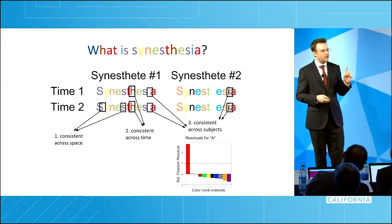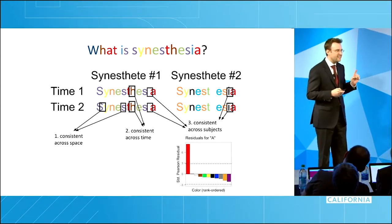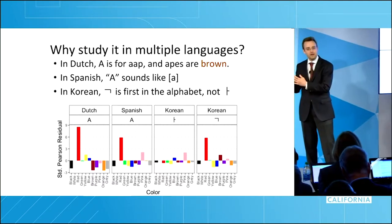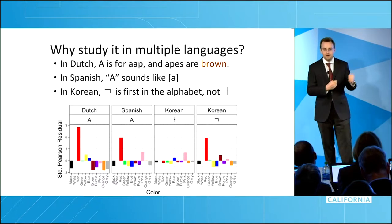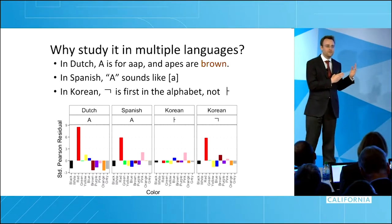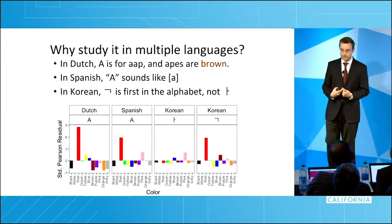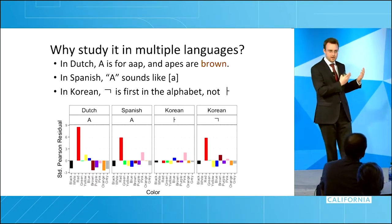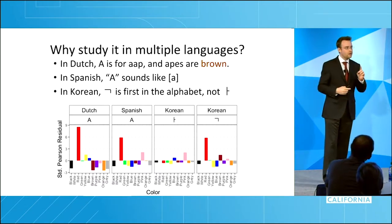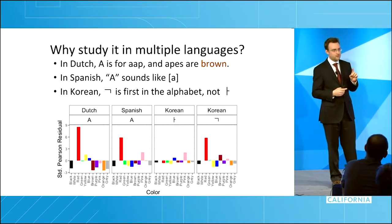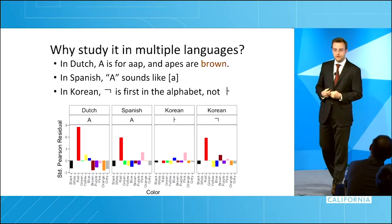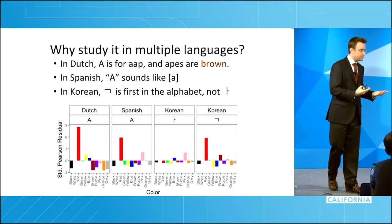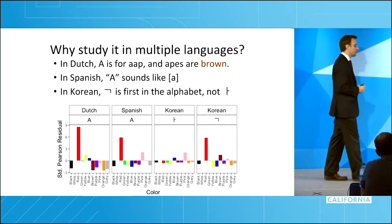Then I realized they only make the same prediction in English. In Dutch, A is for ape, and apes are brown. In Spanish, A sounds like 'ah.' In Korean, A is not the first letter of the alphabet — G is. So I went and found some synesthetes, and it turns out Dutch A is still red, Spanish A is still red, but Korean G is red. By studying synesthesia in multiple languages, I can start figuring out the rules — for example, A is red because it's the first letter of the alphabet.